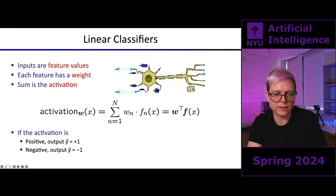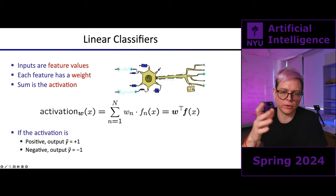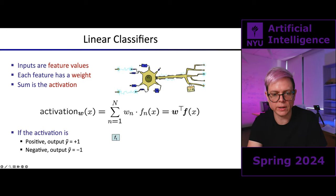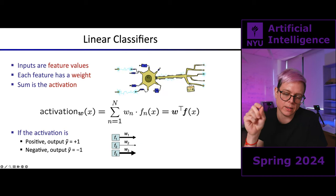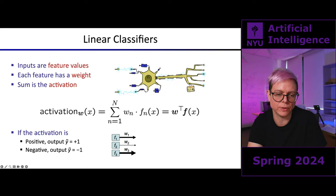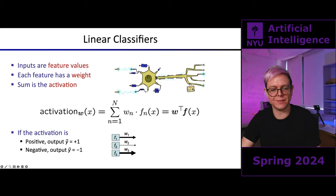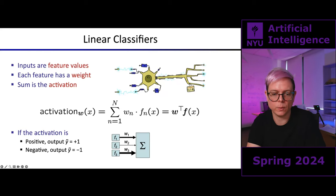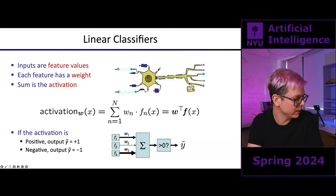If the weighted sum is positive, output plus one — first class. If the inner product is negative, output negative one. The thickness of the arrow represents the weight — how much importance you put on a specific feature. Weights are not necessarily positive; they can also be negative. We multiply each feature by a weight, sum them up to get the activation, and if it's larger than zero output plus one, otherwise output minus one.